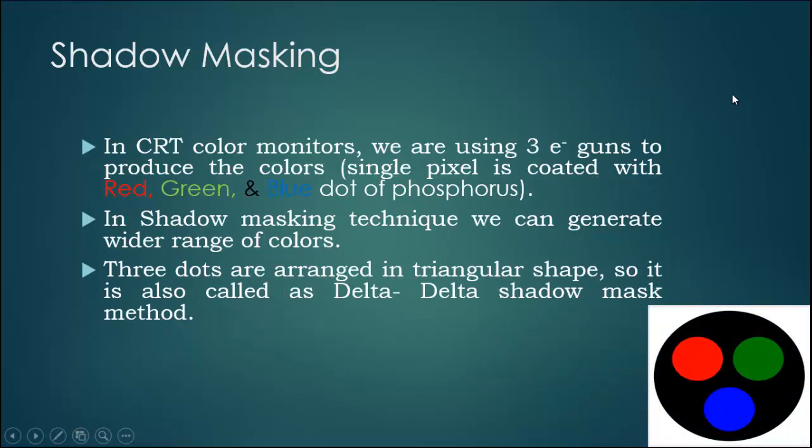Shadow masking in CRT color monitors. We are using three electron guns to produce the colors. Each pixel is coated with red, green and blue dot of phosphorous. In shadow masking technique we can generate wider range of colors. It depends upon the plane bits used in frame buffer.